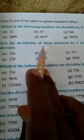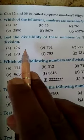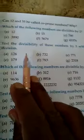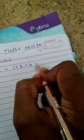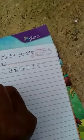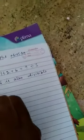Now question number 4: test the divisibility of these numbers by 3 without performing actual division. You don't need to divide, because the rule is that if the sum of the digits is divisible by 3, then the number is divisible by 3. For example, 126: we add the digits — 1 plus 2 plus 6 equals 9, and 9 is divisible by 3. So 126 is also divisible by 3.